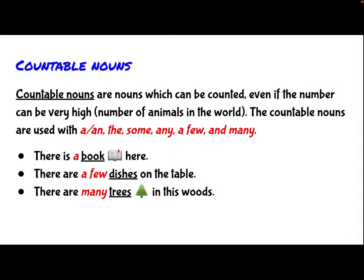There are two more types of nouns which are countable and uncountable nouns. The first is countable nouns. Countable nouns are nouns which can be counted, even if the number can be very high. For example, the number of animals in the world. The countable nouns are used with a or an, the, some, any, a few, and many. For example, there is a book here. There are a few dishes on the table. There are many trees in these woods. The words in red are the words used along with the countable nouns, while the words underlined are the countable nouns in these examples here.